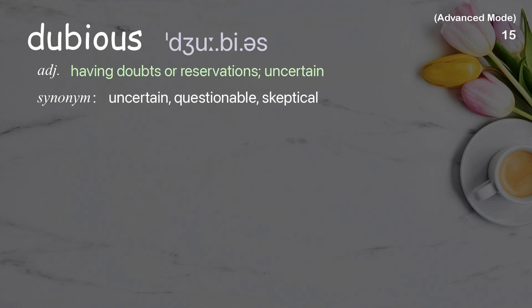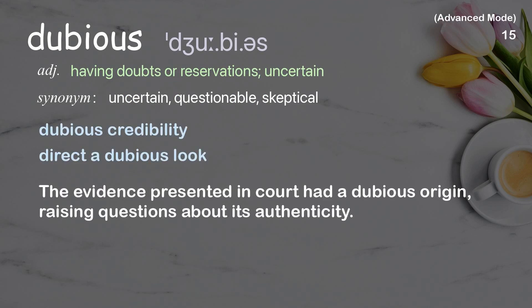Dubious: having doubts or reservations; uncertain. Examples: dubious credibility; direct a dubious look. The evidence presented in court had a dubious origin, raising questions about its authenticity.